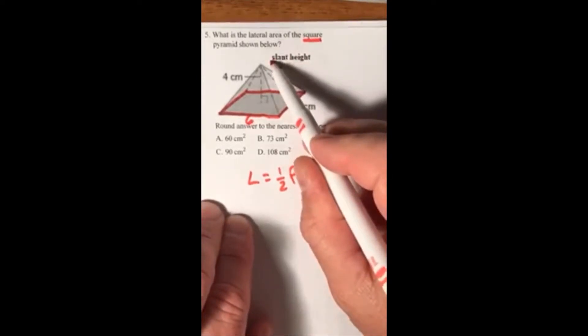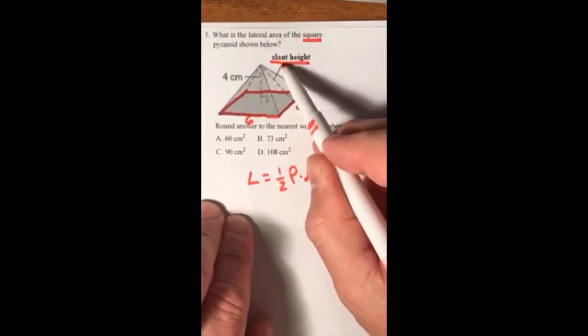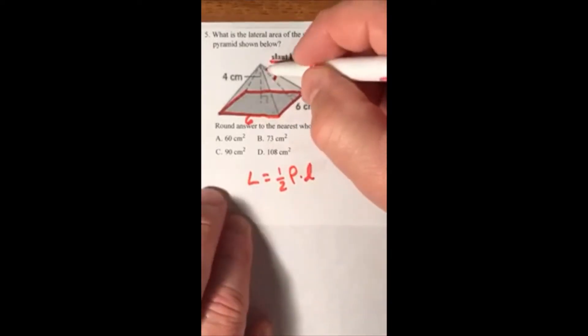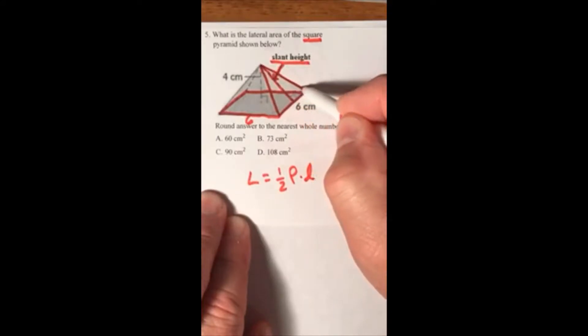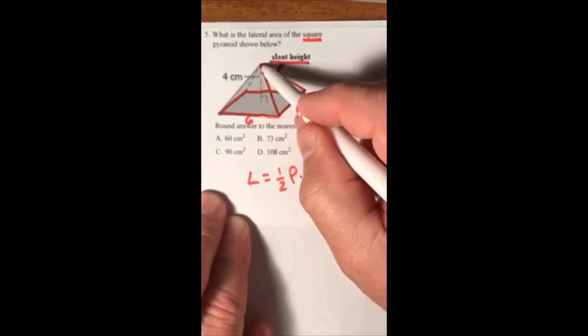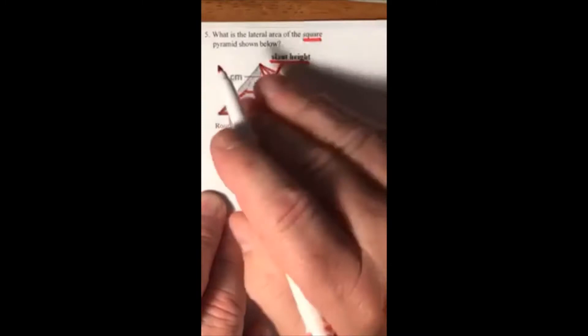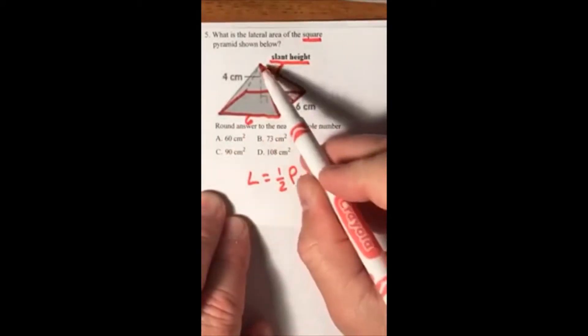I went ahead and wrote this up here for you. Slant height is the height of this triangle, and notice how the triangle is slanted toward the tip, the point of the pyramid. That's why it's slant, the height of the triangle.